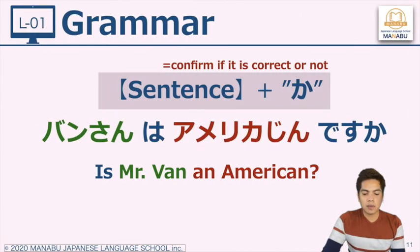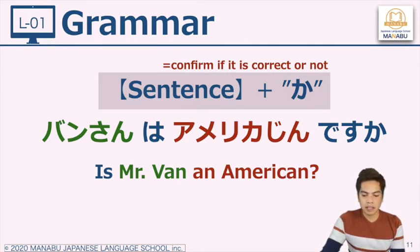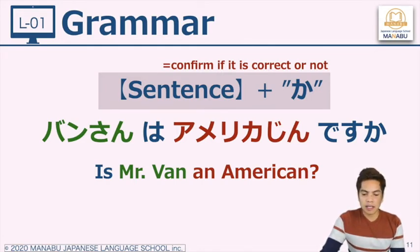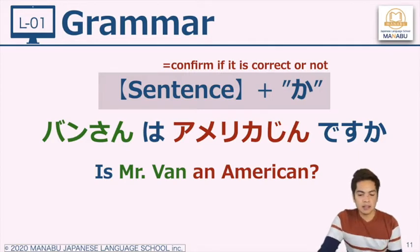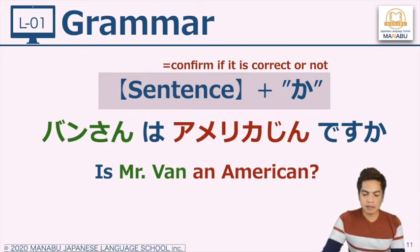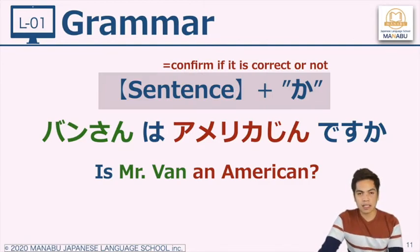Following the pattern: Van-san wa amerikajin desu ka? Mr. Van is American — 'America' is a country name, followed by the suffix 'jin,' which literally means person. So attached to America, it means a person from America. Then we add ka — the question marker. Is Mr. Van an American? You can answer this type of question using yes or no.